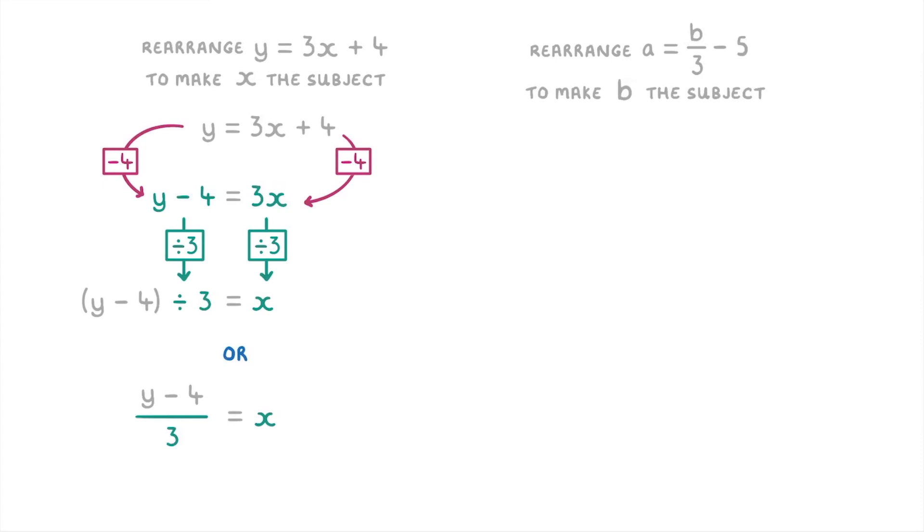Then the very last thing we need to do is swap the two sides around to write it as x equals y minus 4 over 3, so that our x is on the left and counts as the subject of the equation.